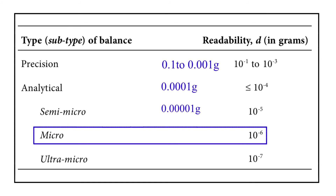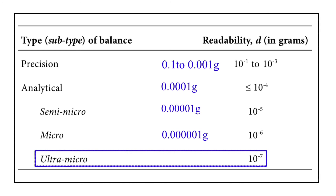Micro balance: if a balance has a readability of 10 raise to power minus 6 gram, it is called a micro balance, which equals 0.000001 gram. Ultra-micro balance: if a balance has a readability of 10 raise to power minus 7 gram, it is called an ultra-micro balance, which equals 0.0000001 gram.